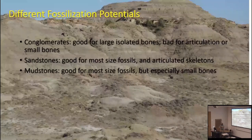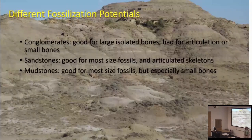Sandstones are wonderful sites for fossilization — a nice medium, not too slow, not too fast. Because of that, they can cover bodies really well and are also pretty good for articulated skeletons, especially of larger animals. Mudstones are also good for most sized fossils. For instance, when a river is at flood stage, the flood plain receives a lot of deposition as mud and silts, likely covering bodies well. But mudstones are also the best thing to preserve small bones. So it's worth noting: the environments good for preserving big animals are often not good for preserving small animals, and vice versa.